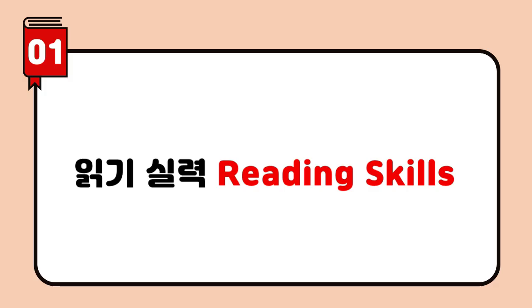First of all, read the whole text quickly and silently. You don't have to read word by word at this stage. As you read along, try to notice what the text is about. It's about the dangers of Internet games.